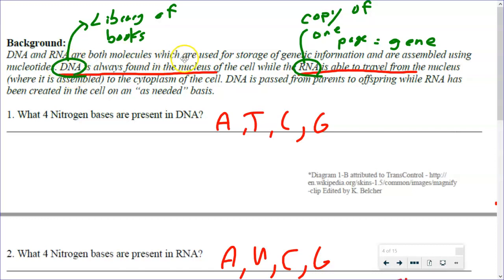Let's say your body has a cut on a finger. Well, we don't need the information for brains and kidneys and bones to fix a cut on a finger — we just need some skin cells. So the RNA is a copy of just the skin cell information, and then that copy can leave the nucleus and go to where we have to build those new cells.